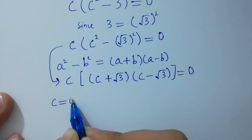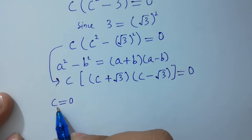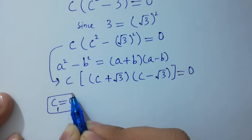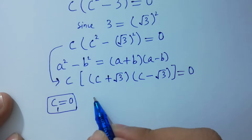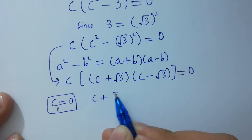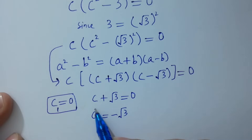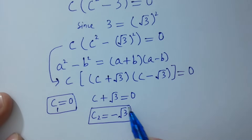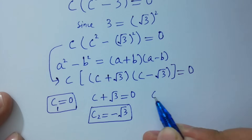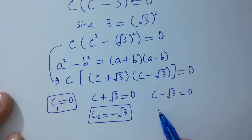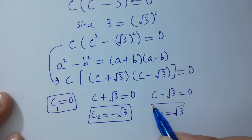So the three solutions are: c₁ equal to 0 (first solution); from c plus √3 equal to 0, c₂ equal to minus √3 (second solution); and from c minus √3 equal to 0, c₃ equal to plus √3 (third solution).